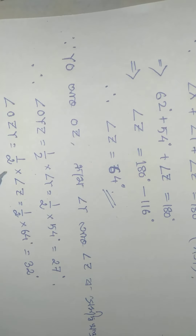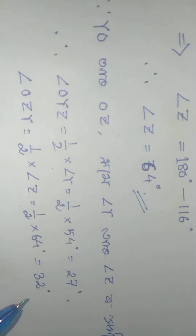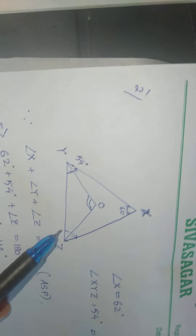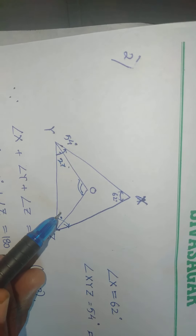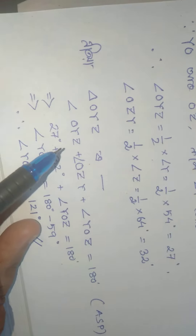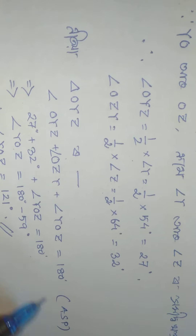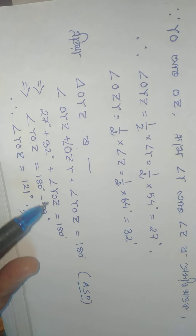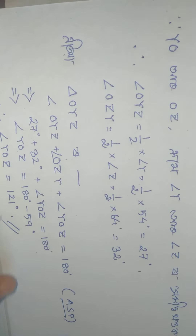Angle OZY is 27 and 32 degrees. OYZ plus OZY plus YOZ equal to 180 degrees. OYZ is 27, OZY is 32. YOZ equal to 180 degrees minus 59. YOZ equals 121 degrees.